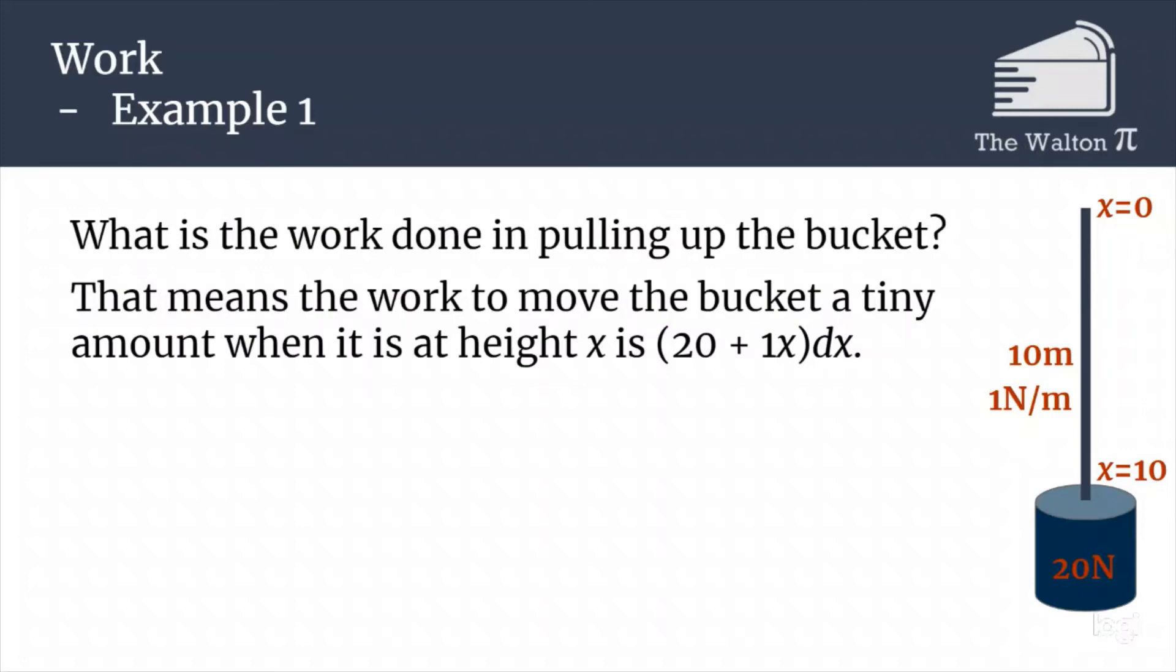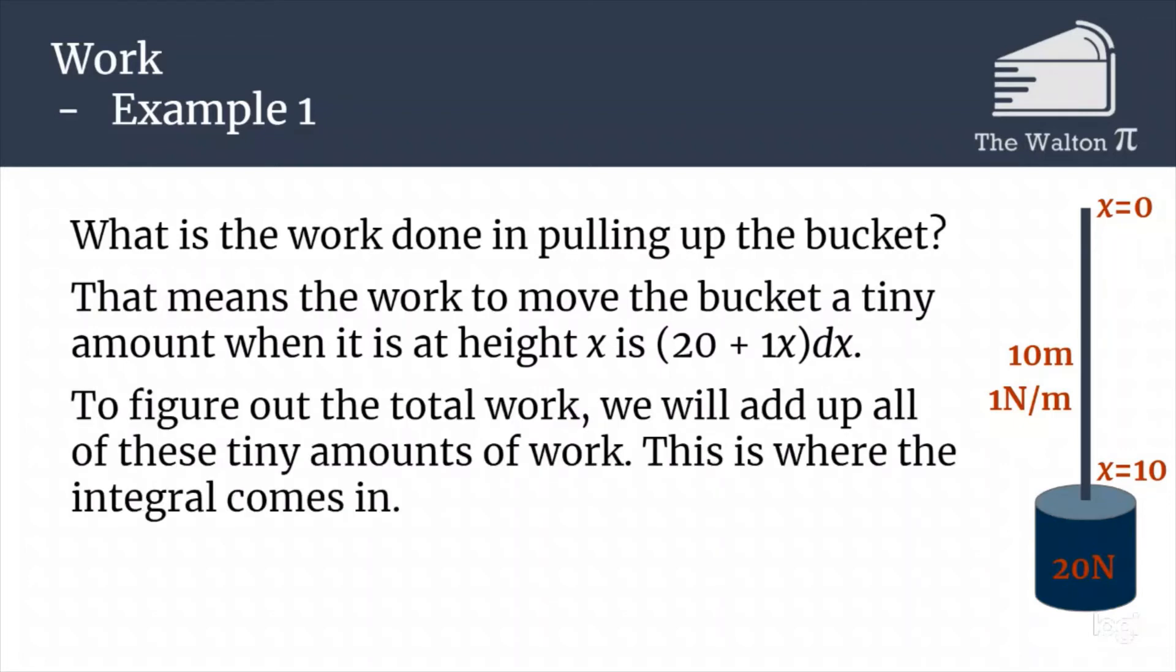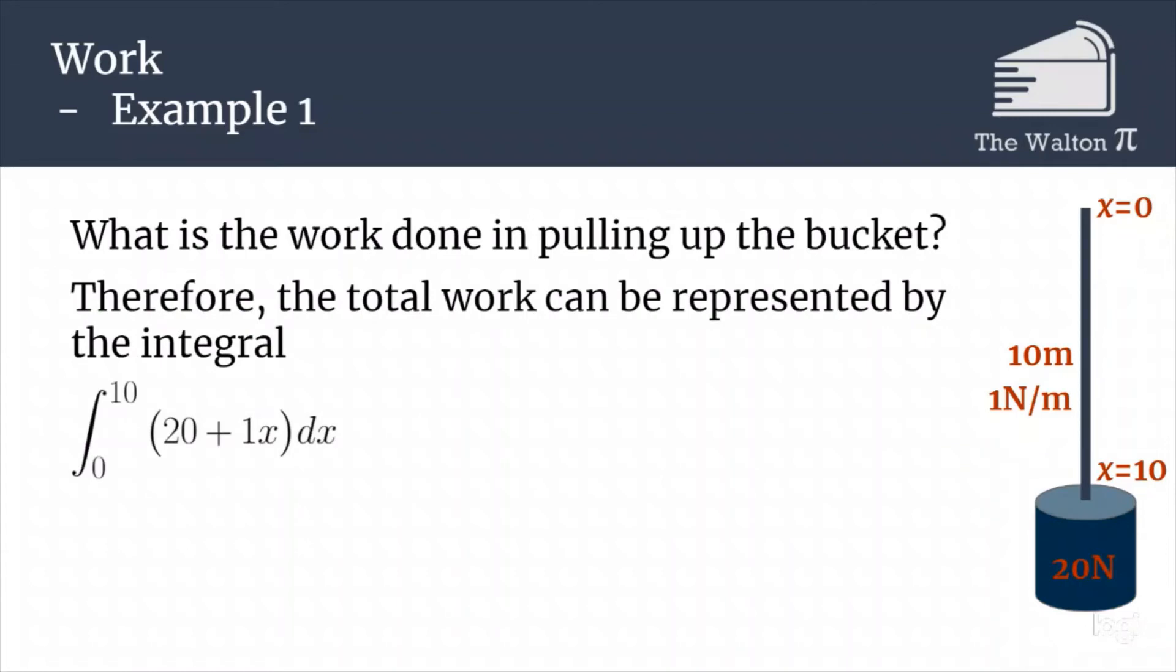That means that the work to move the bucket a tiny amount when it's at height x is 20 plus x all times dx. To figure out the total work, we're going to add up all of these tiny amounts of work, which we can actually compute using an integral. So the total work is the integral from 0 to 10 of (20 + x) dx. The 20 plus x is our force, the dx is our distance, and 0 to 10 is saying what values of x we are going to be including. The bucket has to pass between every value between 0 and 10, so that is why it's the integral from 0 to 10.